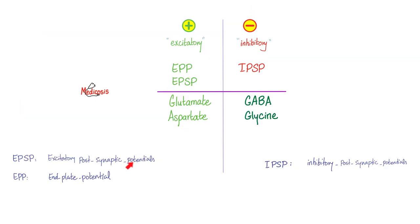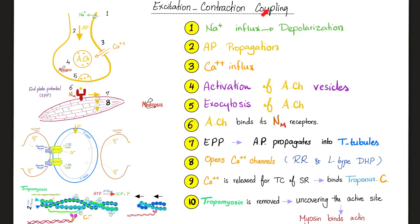The end plate potential is excitatory. Excitatory post-synaptic potentials are excitatory. EPP is a subtype of EPSP. However, IPSPs are inhibitory. When it comes to neurotransmitters: glutamate and aspartate are excitatory; GABA and glycine are inhibitory.